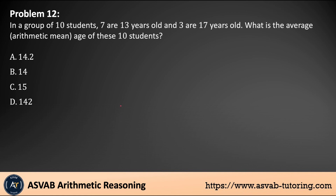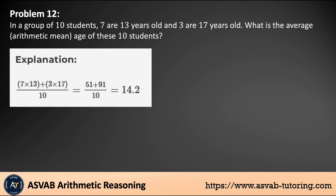Next problem: in a group of 10 students, 7 are 13 years old and 3 are 17 years old. What is the average arithmetic mean age of these 10 students? Arithmetic mean and average are the same thing. Multiply 7 times 13 and 3 times 17. 7 times 13 gives you 91, and 3 times 17 gives you 51. Add them up and divide by 10, giving you 14.2. The average age is 14.2 years. That is the final answer.